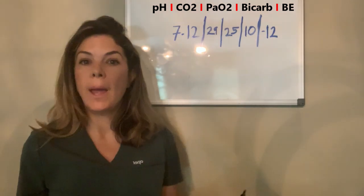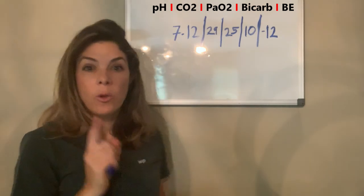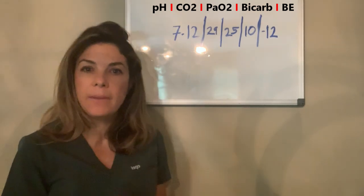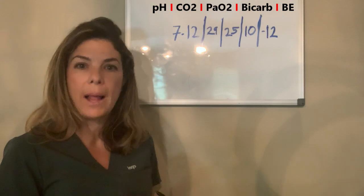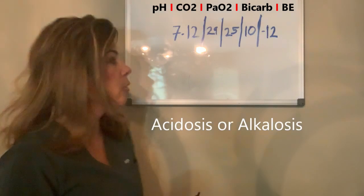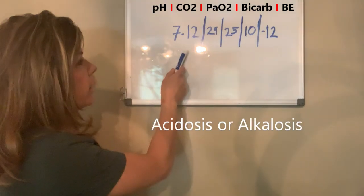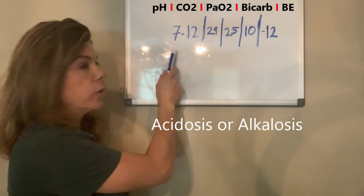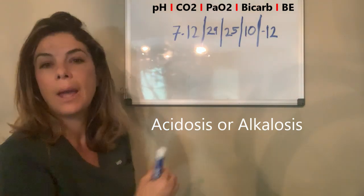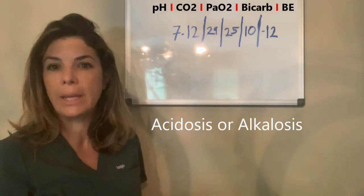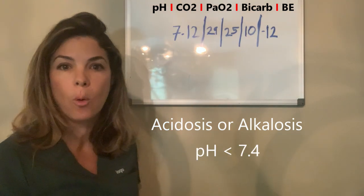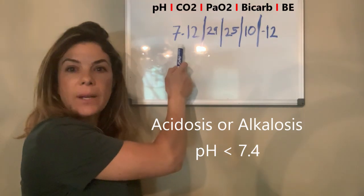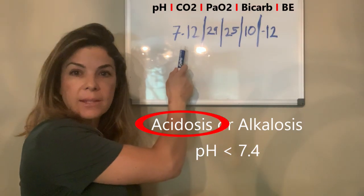So how do we analyze this? The first thing we look at is: is this baby acidotic or alkalotic? We look at the pH, which is 7.12 — significantly less than 7.4. So this baby definitely has acidosis.